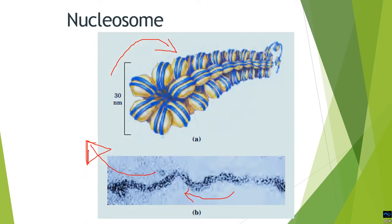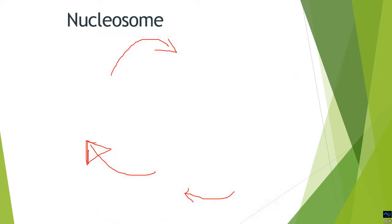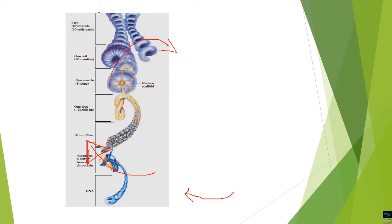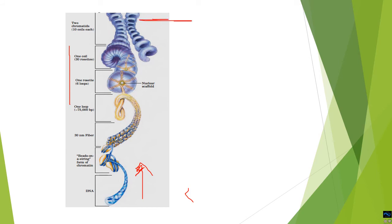At the next level of compaction, nucleosomes are packed together to form a rosette shape of 30 nanometers, which further packs the DNA into a higher degree of condensation. As you can see in the diagram, the compaction proceeds stepwise from double-stranded DNA to the beads-on-a-string structure, then to a rosette shape, then to a loop structure, then to the solenoid and coil structure, and finally compacts as the chromosome.